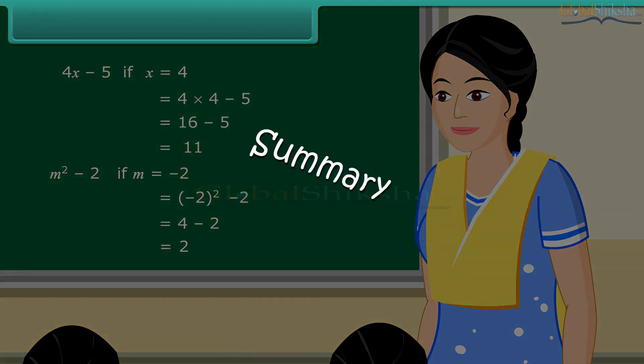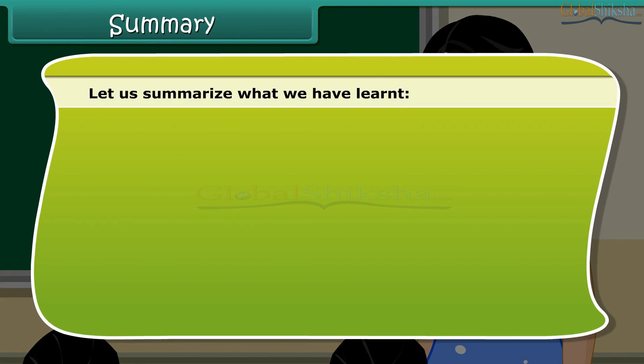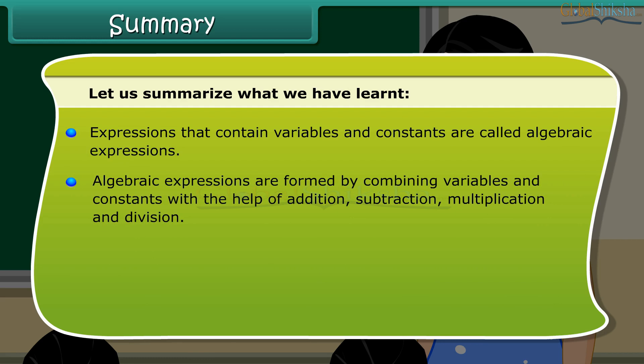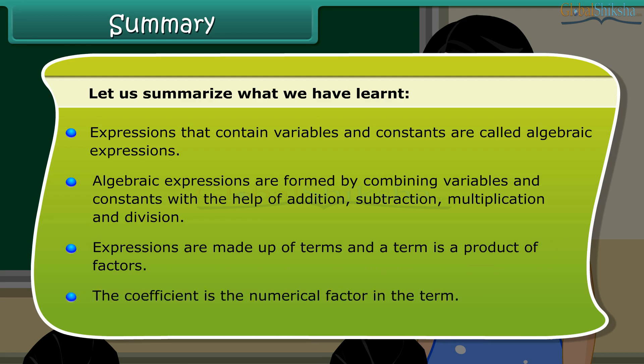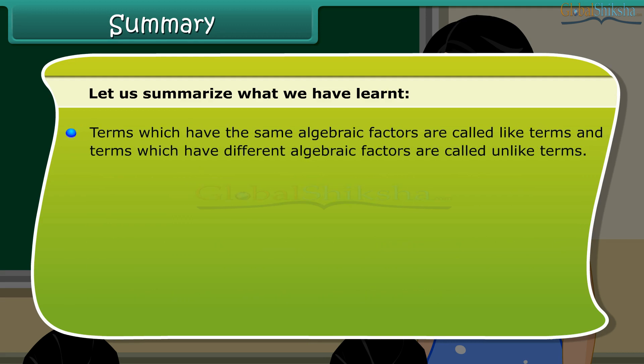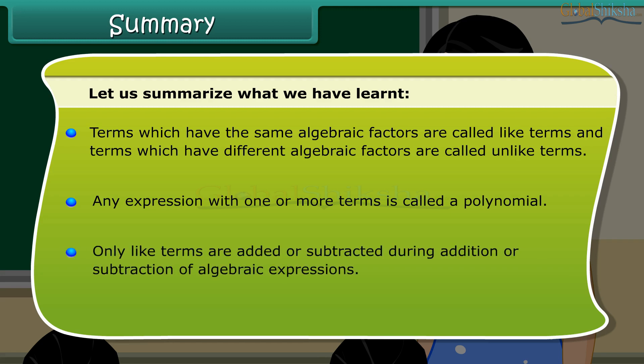Summary. Let us summarize what we have learned. Expressions that contain variables and constants are called algebraic expressions. Algebraic expressions are formed by combining variables and constants with the help of addition, subtraction, multiplication and division. Expressions are made up of terms and a term is a product of factors. The coefficient is the numerical factor in the term. Terms which have the same algebraic factors are called like terms, and terms which have different algebraic factors are called unlike terms. Any expression with one or more terms is called a polynomial. Only like terms are added or subtracted during addition or subtraction of algebraic expressions. Thank you.